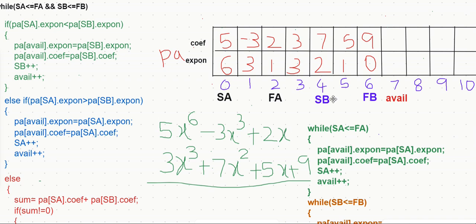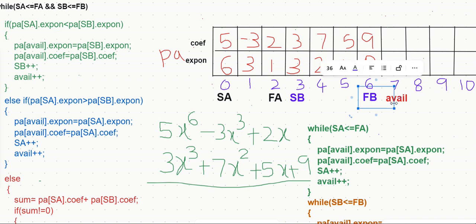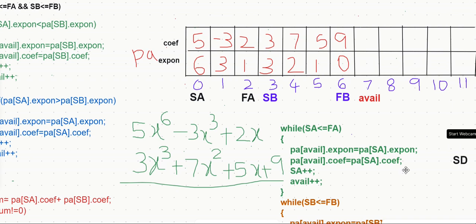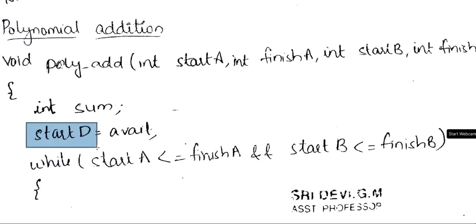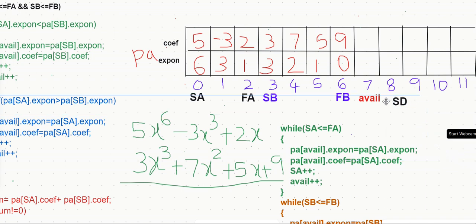We are now going to add these two polynomials and put the result into the avail list, appended to the same array. SB actually starts from 3x^3, so SB is going to be from index 3. We are going to keep track of an avail pointer — avail indicates the available slot where we can store new data. We will use another indicator, start D (SD), initialized to the avail list.